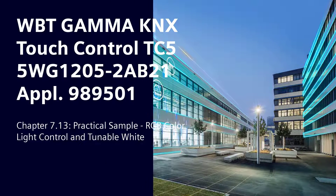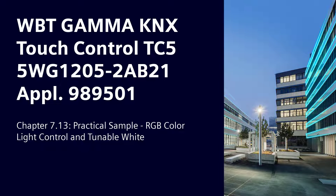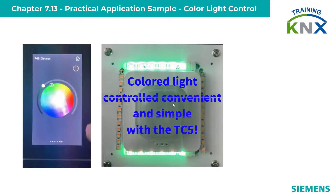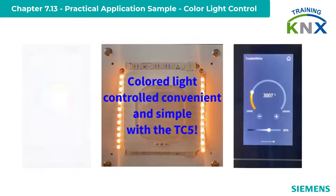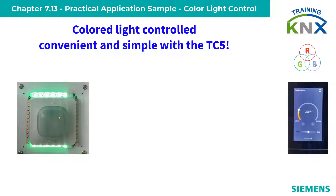Chapter 7.13: Siemens Gamma KNX Touch Control TC5 - Color Light Control and Tunable White. To conclude the practical videos, I will now show how to implement RGB colored light control on the TC5 and the special case of tunable white, that is the control of a variable white light source via the color temperature. As the range of colored luminaires is growing, customer interest in using such luminaires instead of just monochrome white lighting is also increasing.